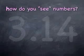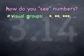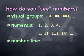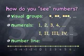This video is about how we see numbers. I decided there are many ways. Here are three of them: visual groups for small and large numbers, numerals of different cultures, and the number line, sort of a mathematical ruler.